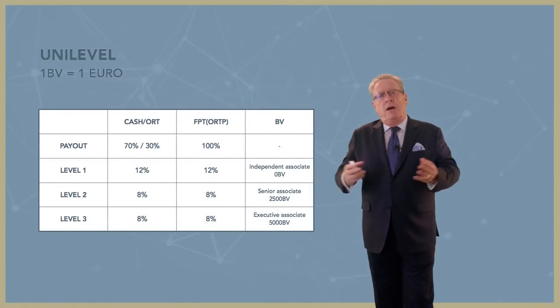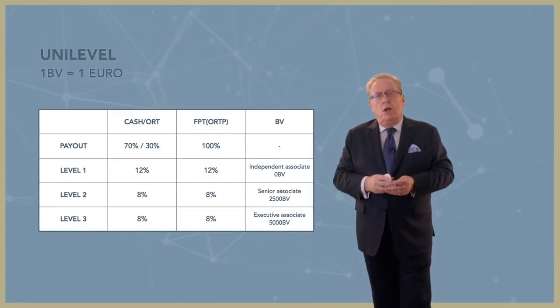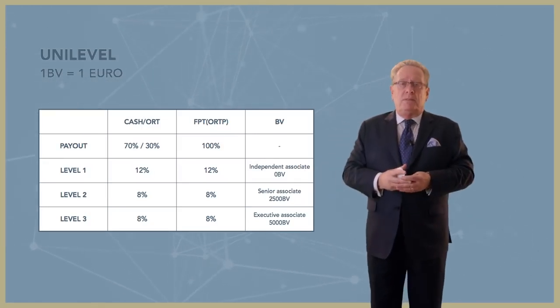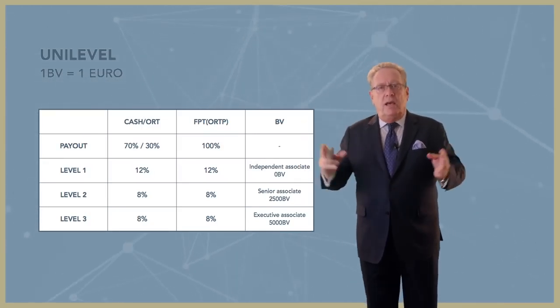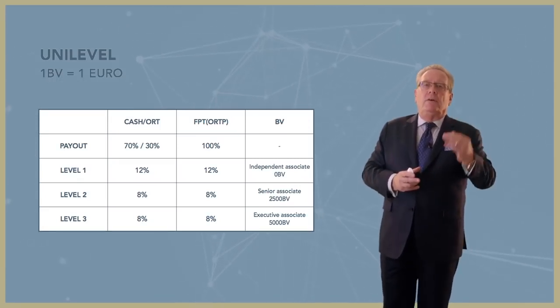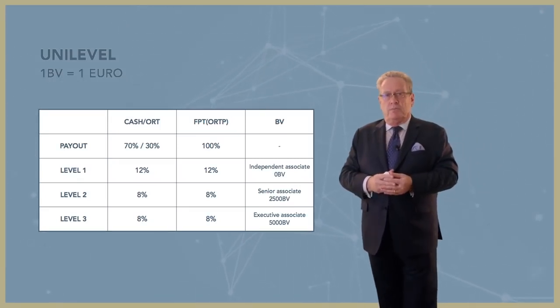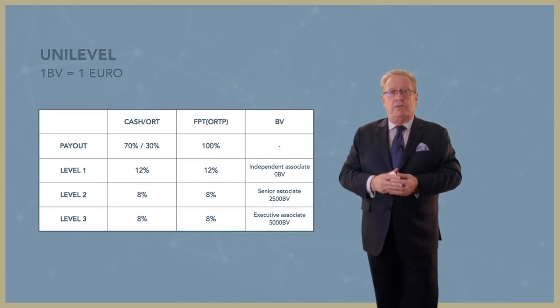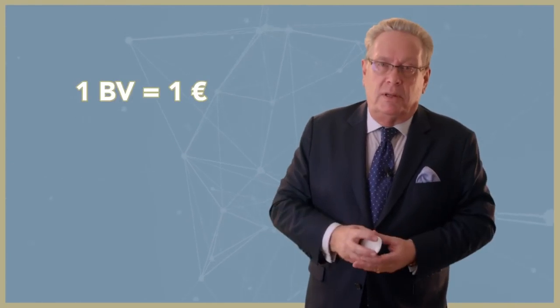We have a uni-level, a uni-level part of our compensation plan where you can qualify by generating what we call BV, business volume, within a certain time period that will qualify you for three levels of uni-level bonus: 12% first level, 8% second, 8% again on the third. And as I said earlier, ladies and gentlemen, the same value you will also receive in free promotional tokens. One BV equals one euro is a very, very simple conversion rate.